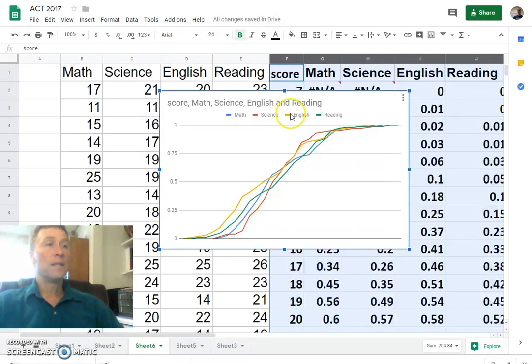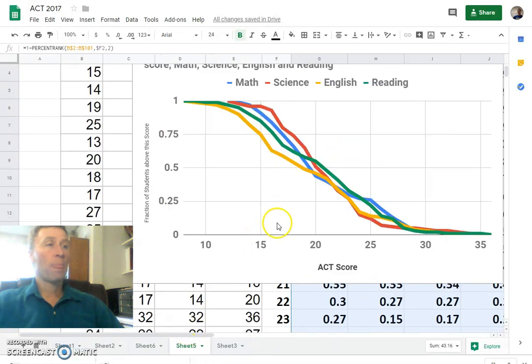The way I did that is instead of saying equals percent rank, I said equals one minus the percent rank. So it just flipped it over. Either way, whatever you're trying to present, it may change the way you want to display that.